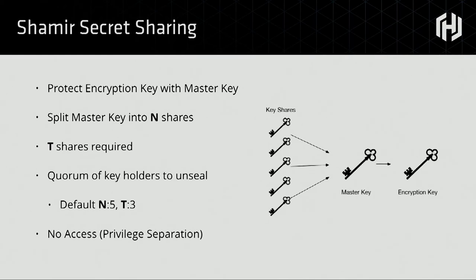By default, the system builds five different shares, three of which must be recombined to form the master key. There's really no access granted to an operator who's a keyholder — having one of five keys gives you nothing. There's no information leaked about the master key and no capability to do anything against the system. This goes back to the principle of privilege separation — you need a quorum of operators to perform a sensitive operation that could result in compromise of the master key.